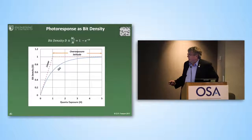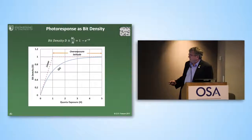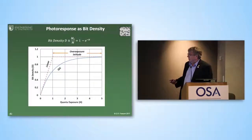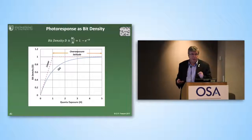When you have binary data it behaves a little differently. The response — if you think about bit density, which is a lot like film grain density — as you increase the exposure, it doesn't grow linearly. It actually follows 1 minus e to the minus h, where h is the total exposure. This gives you a lot of overexposure latitude, and basically it takes a while to hit every single pixel on the focal plane with a photon, since many pixels are hit more than once before every pixel is hit.